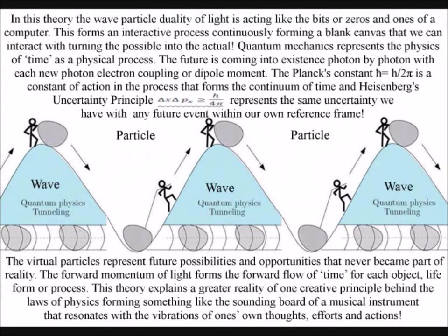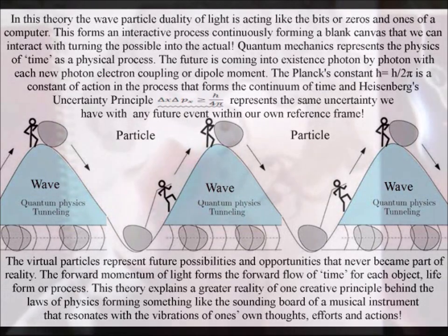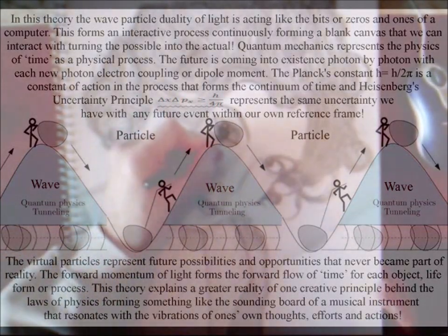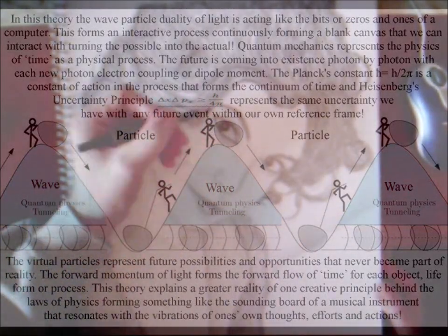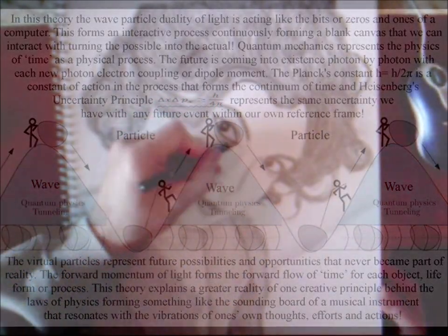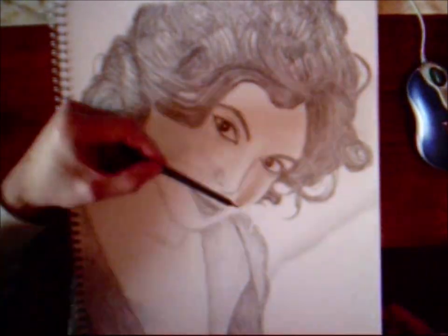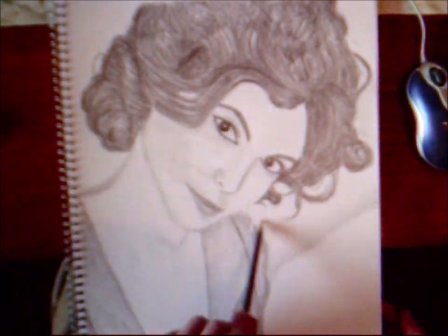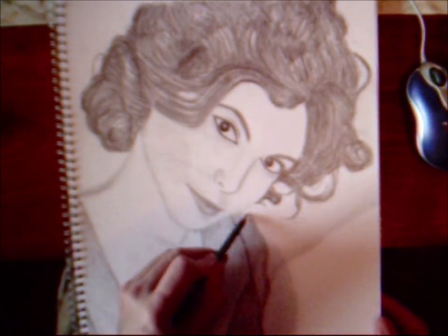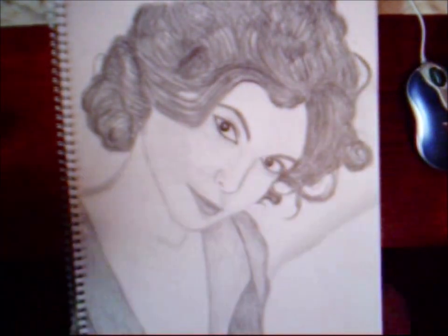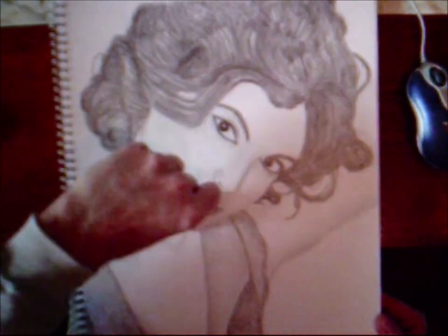In this theory we have free will, because the wave-particle duality of light is acting like the bits or zeros and ones of a computer. This forms an interactive process, continuously forming a blank canvas that we can interact with, turning the possible into the actual.